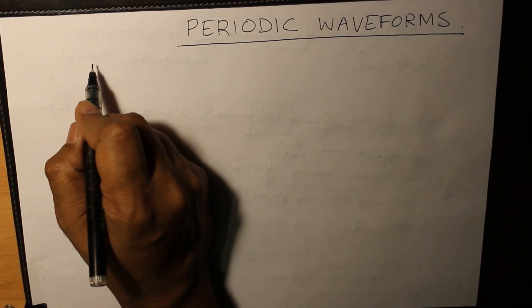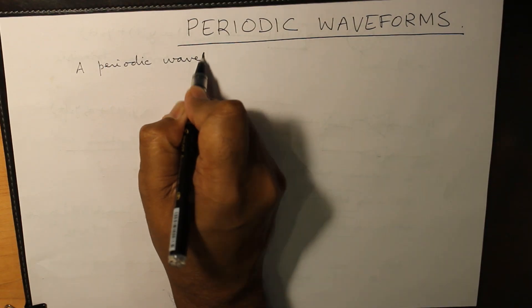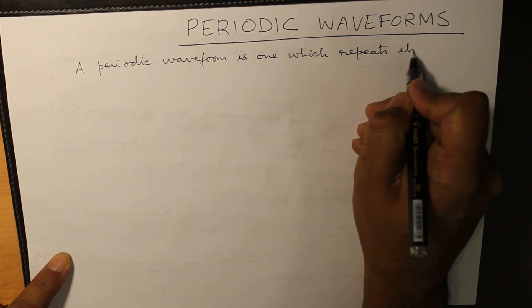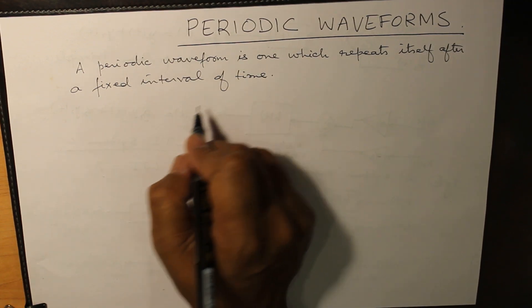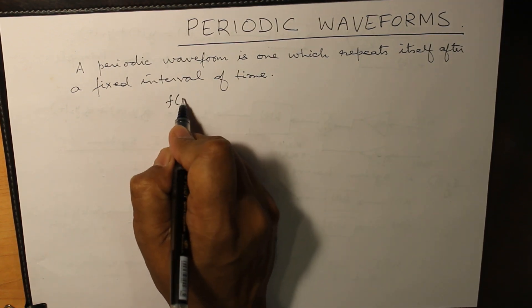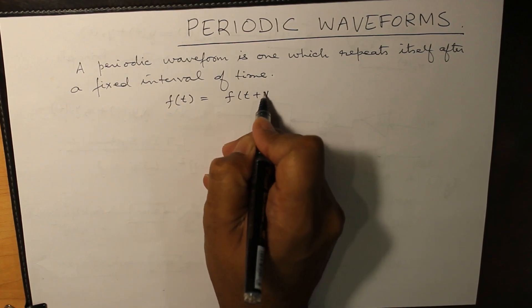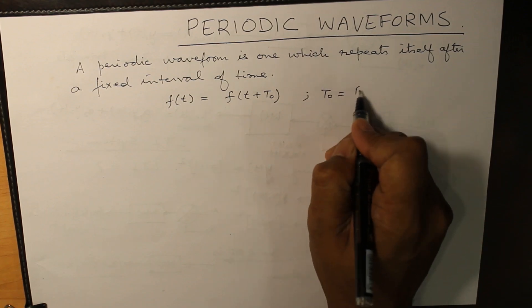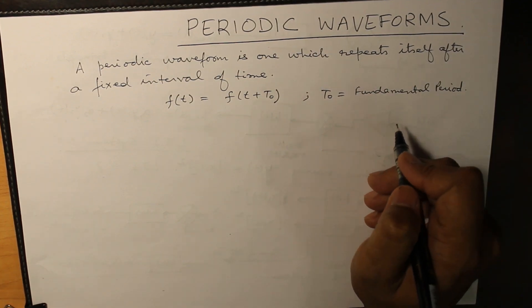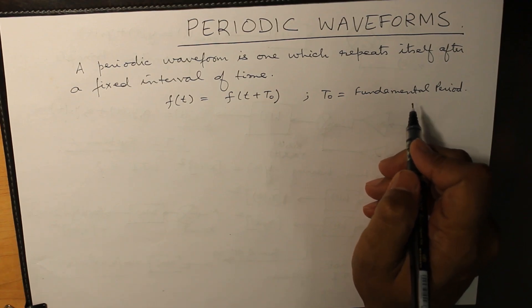Today we are starting the topic of periodic waveforms. A periodic waveform is one which repeats itself after a fixed interval of time. For example, f(t) = f(t + t0). t0 is known as the fundamental period. The fundamental period is the minimum value of time over which the repetition is taking place.